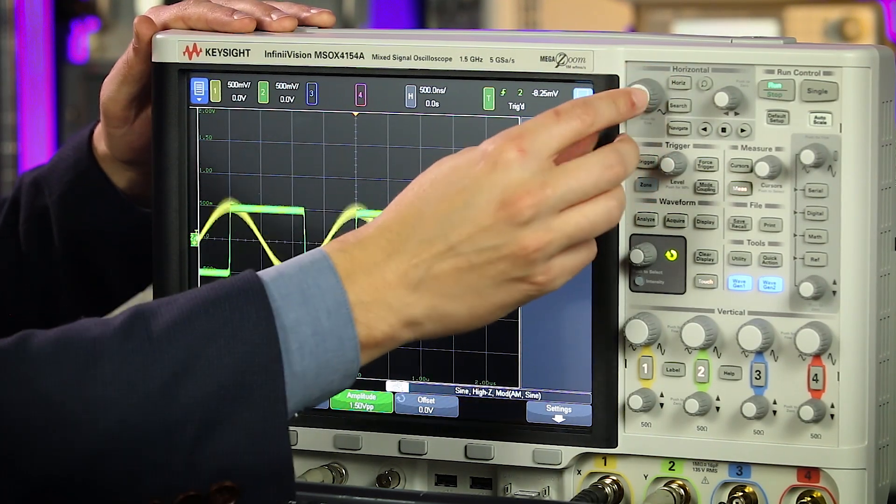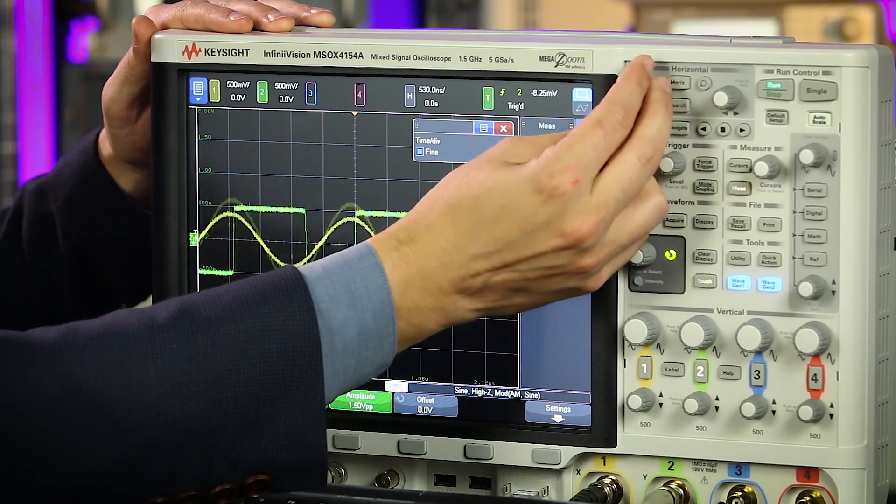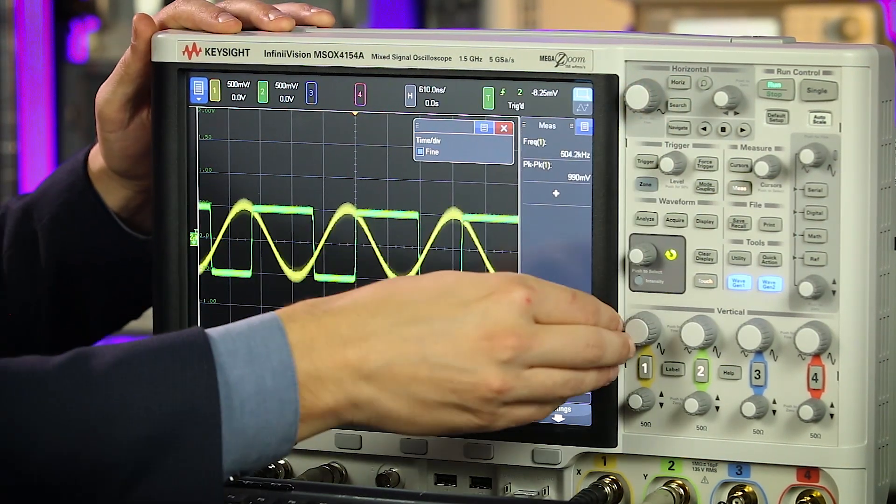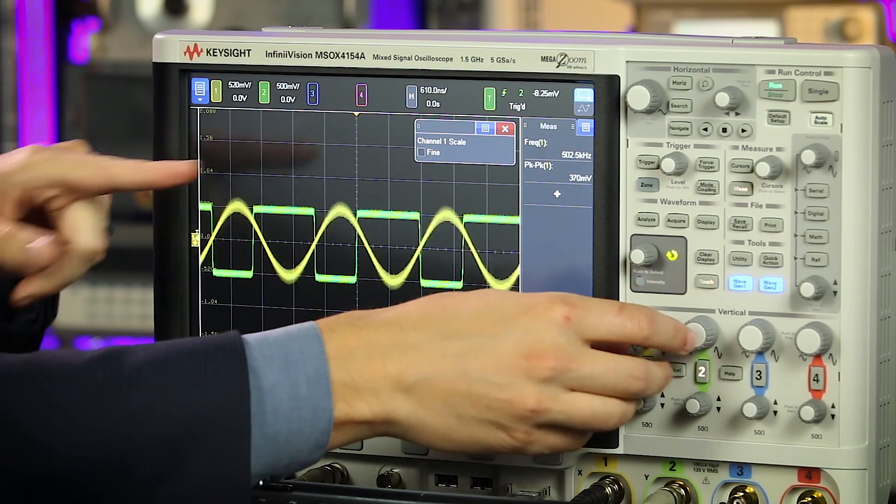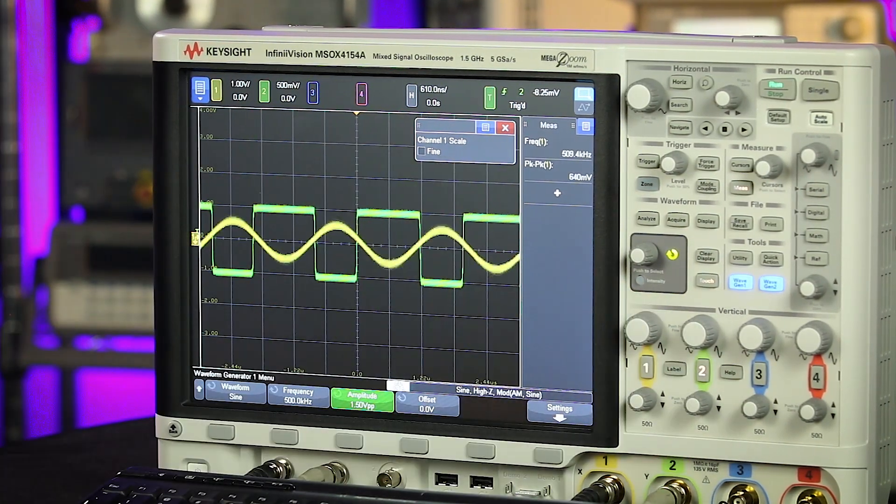For some of the knobs, it wouldn't make sense to zero them out or center them like the volts per division knob and the time per division knob. Pushing these lets you toggle between coarse and fine controls. And this is also true for the channel buttons. You can see now I'm in fine. When I poke it, I go out of fine and I have a coarse control of the channel.